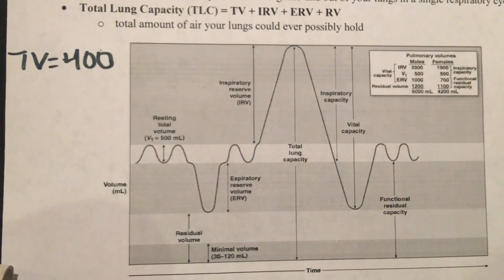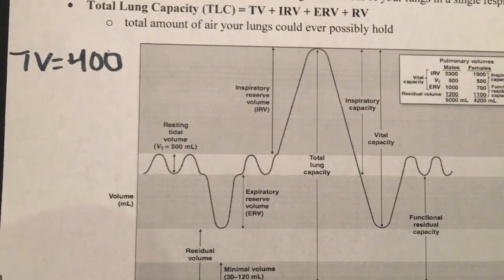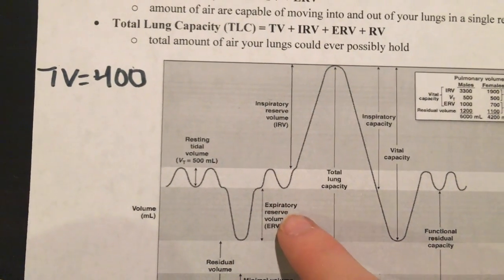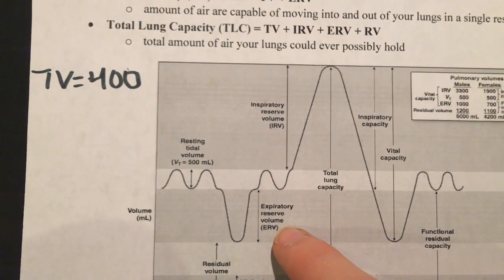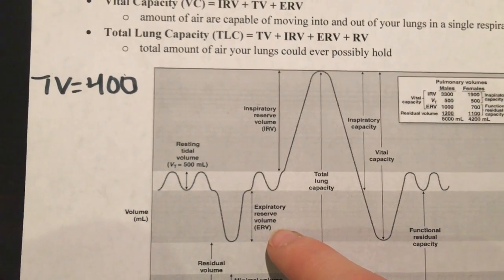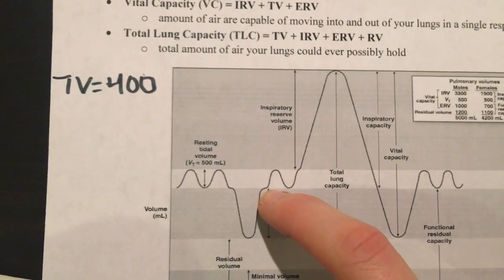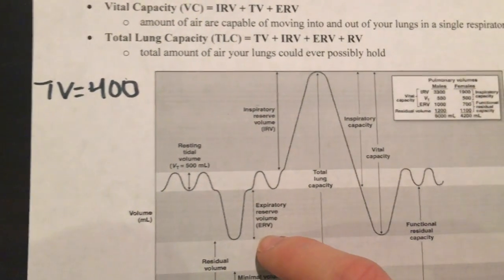The next volume that we can measure using our spirometer, where we're only allowed to do exhaling, is the expiratory reserve volume, or ERV. I can do that by taking in a regular breath, breathing out a regular breath, getting to the bottom of my tidal volume, and then exhaling forcefully to get the ERV.